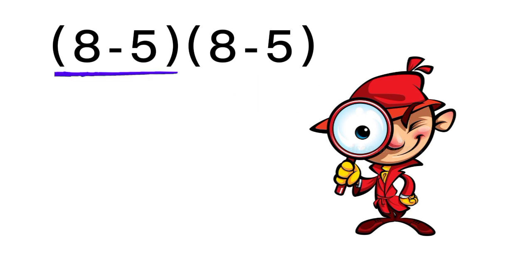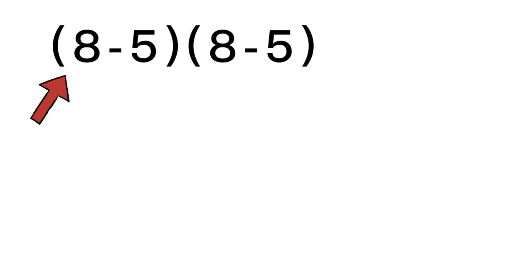You might say 8 minus 5 equals 3, and then again, 8 minus 5 equals 3. So 3 times 3 gives 9, but that's not the right answer. Here's the problem, we didn't follow the order of operations.